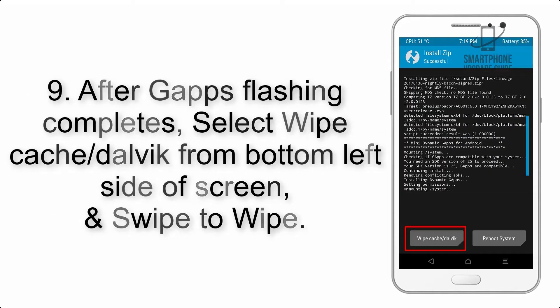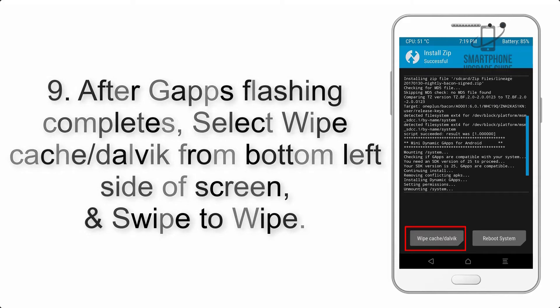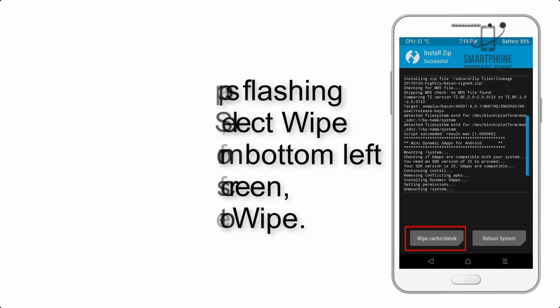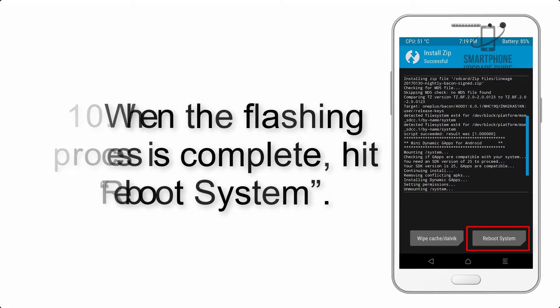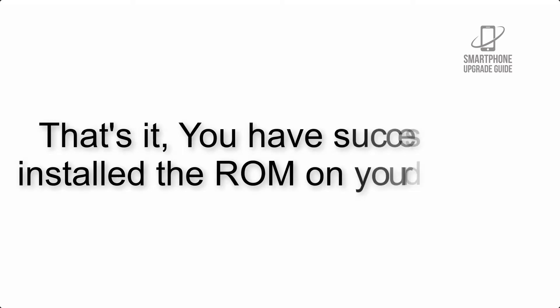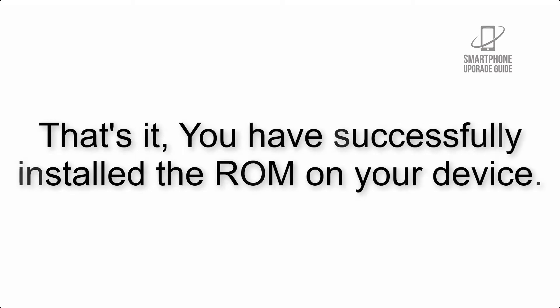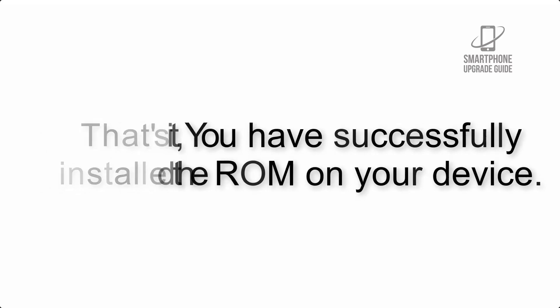Step 9: After GApps flashing completes, select Wipe Cache and Dalvik from the bottom left side of the screen and swipe to wipe. Step 10: When the flashing process is complete, hit Reboot System. That's it — you have successfully installed the ROM on your device.